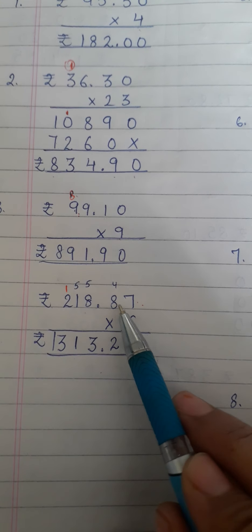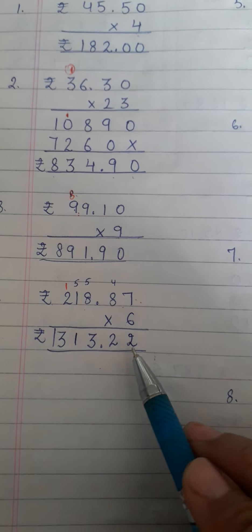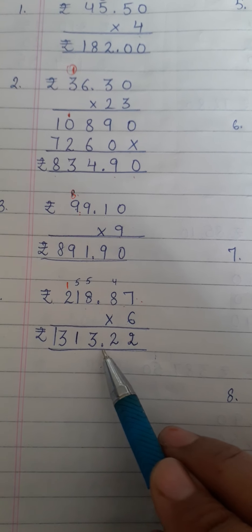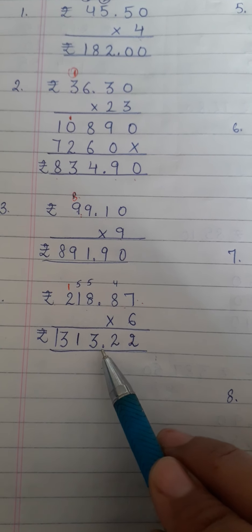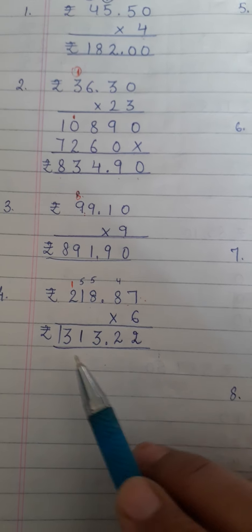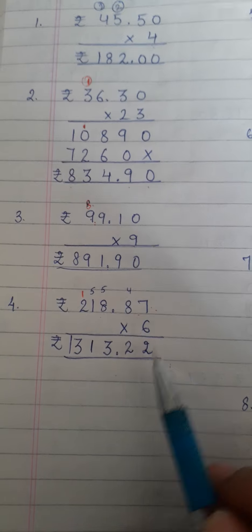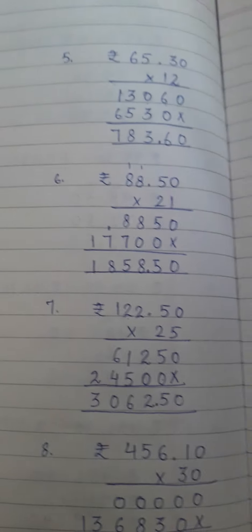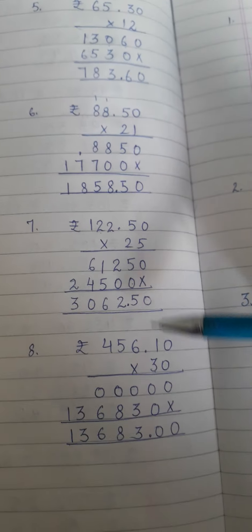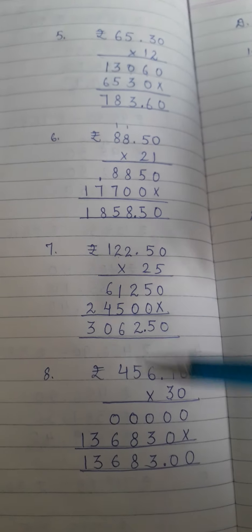So now after decimal we have 2 digits. So before 2 digits I have to put decimal 1, 2. Here I will put decimal. Answer is rupees 1313 and 22 paisa. Next questions 5, 6, 7 and 8 you will do yourself.